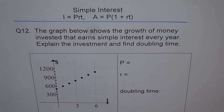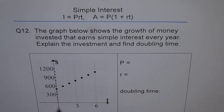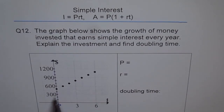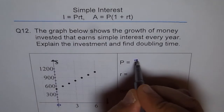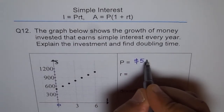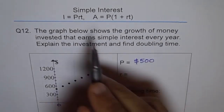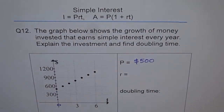First, what is the principal amount invested? At time zero, the principal amount invested is $500. So P equals $500.